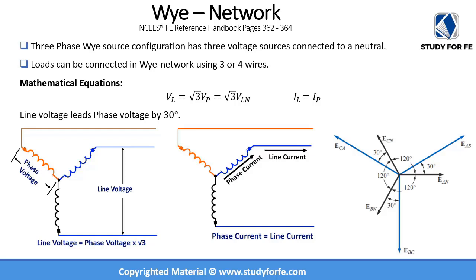Let us now look at mathematical equations for the Y-network. First and foremost, the line voltage is always greater than the phase voltage in a Y-network by a factor of square root of 3, which is approximately 1.732. The line current is the same as the phase current. These are two distinguishing features of the Y-network. The line current equals phase current because the phase current leaving the phase actually ends up being the line current.